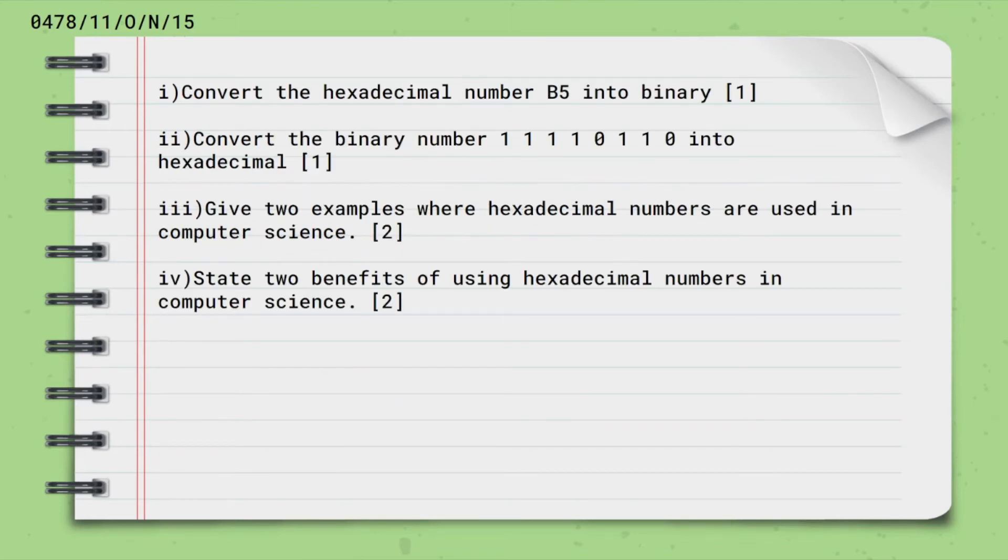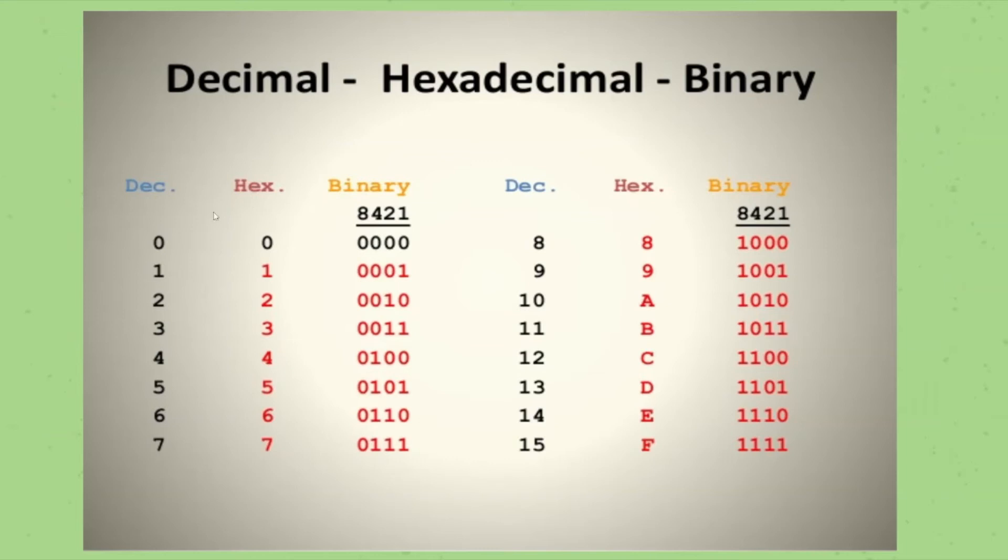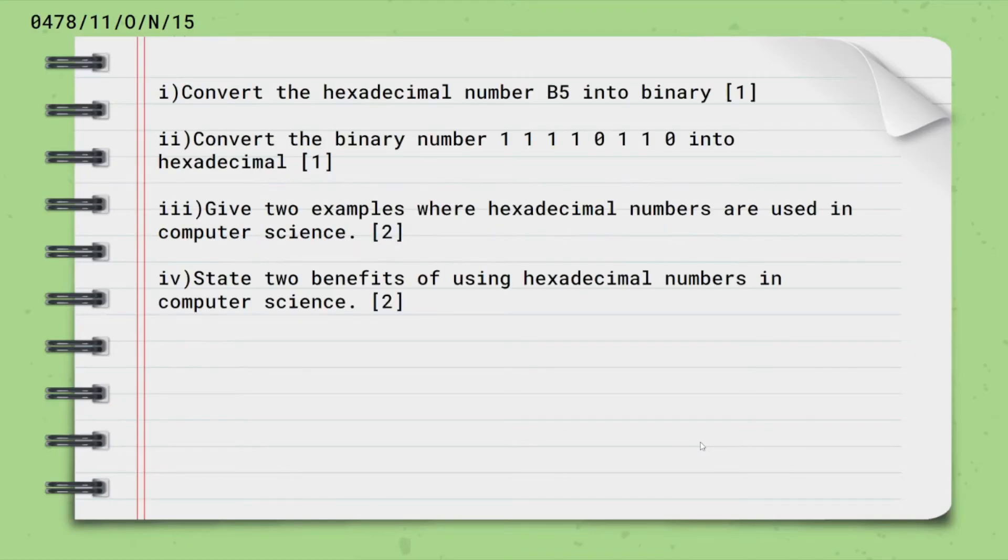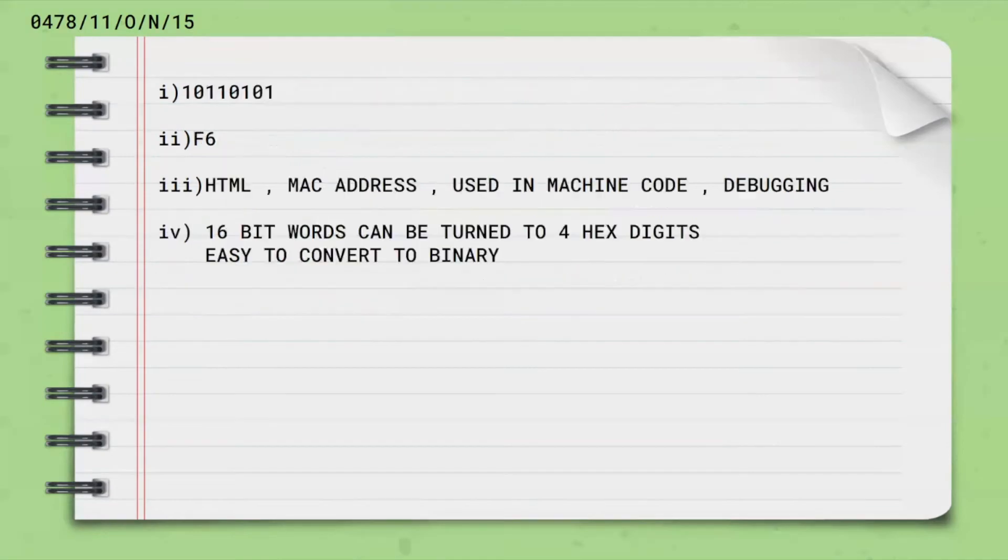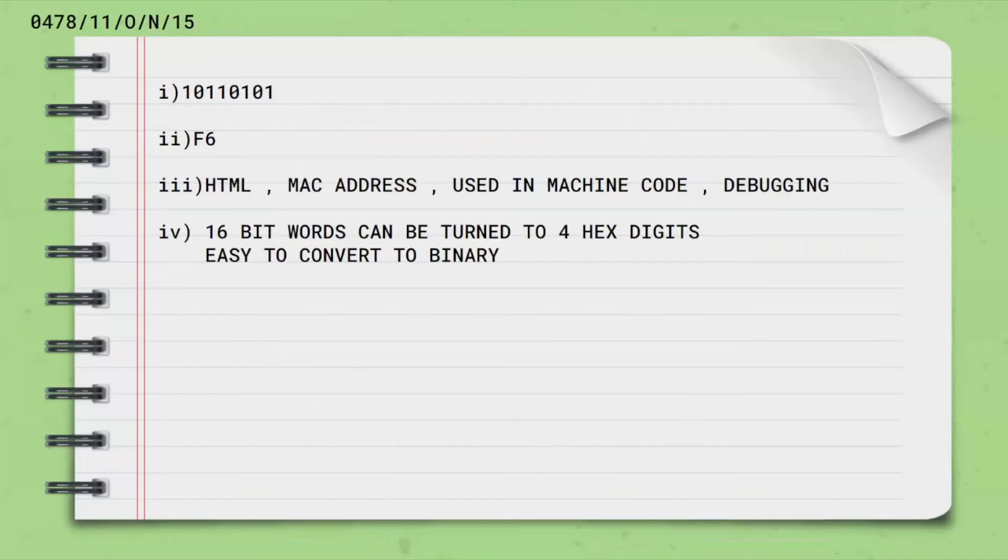Now let's do binary to hexadecimal. 1111, this is a 4 digit group. 0110 is a 4 digit group. Now 1111 means all the numbers in 8421 are used. That is 8 plus 4 plus 2 plus 1. That becomes 15. And that digit for 15 is F. Then for 0110 means 4 and 2 are used. So 4 plus 2 is 6. So it is F6. I hope you understand this question.